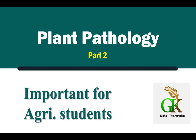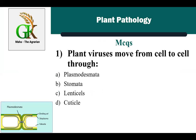The first MCQ is: plant viruses move from cell to cell through — the correct answer is A: plasmodesmata. Plasmodesmata are openings on cells, and using these openings plant viruses move from one cell to another.